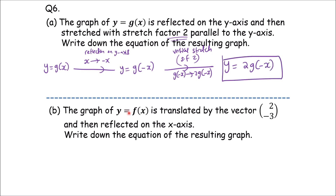Next, the graph of y equals f of x. We need to do a translation of (2, -3), which means a horizontal and vertical translation, and then reflected on the x-axis. We need to organize it step by step: horizontal and vertical.